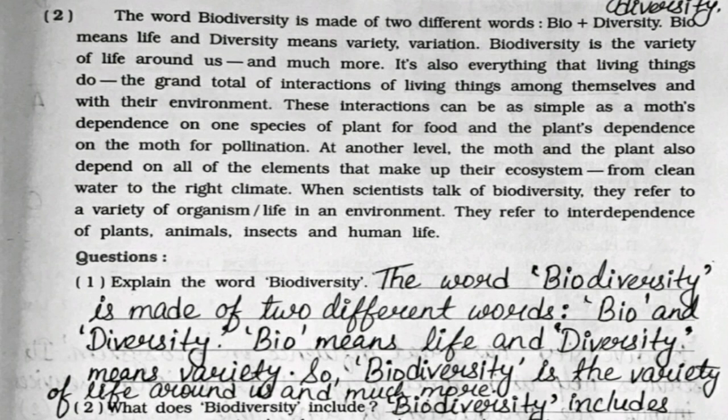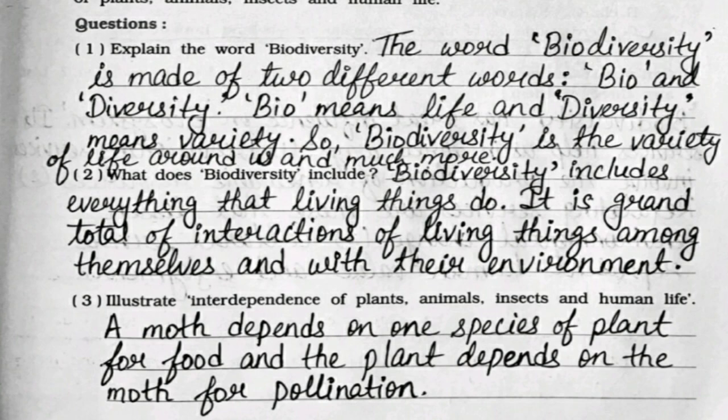Now second paragraph question answers. First: Explain the word biodiversity. The word biodiversity is made of two different words — bio and diversity. Bio means life and diversity means variety. So biodiversity is the variety of life around us and much more. Second: What does biodiversity include? Biodiversity includes everything that living things do. It is the grand total of interactions of living things among themselves and with their environment. Third: Illustrate interdependence of plants, animals, insects and human life. A moth depends on one species of plant for food and the plant depends on the moth for pollination.